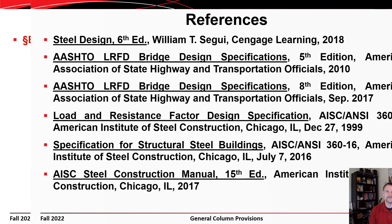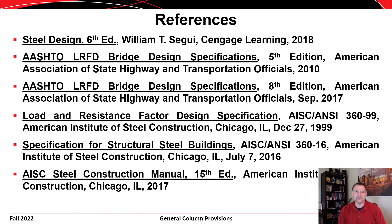That brings us to the end of this lecture. After this you should have a basic idea of how the AISC specification design provisions were derived — not necessarily from a quantitative standpoint but at least qualitatively. This builds on the Euler buckling modes derived in an earlier lecture and applies the concepts of residual stresses and initial out-of-straightness to arrive at practical design equations we'll use in our calculations.